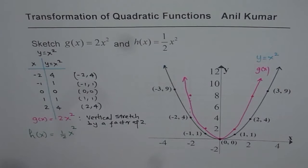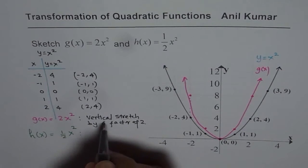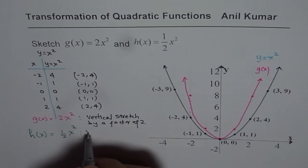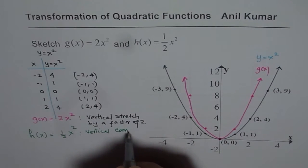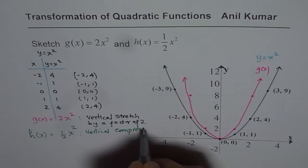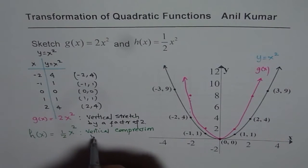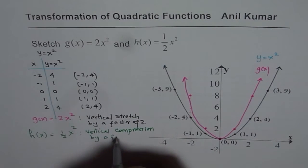Now here what do we have? In this particular case we have vertical compression. So here we have vertical compression by a factor of half.